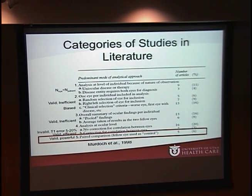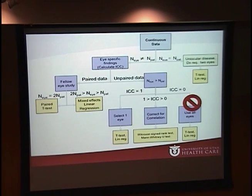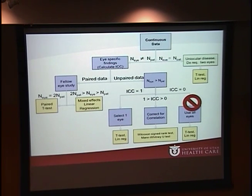The second subgroup did correct for correlation of data — only 3% of studies — and was valid and efficient. The final category is paired eye comparisons using the fellow eye as a control, which is a valid and powerful method. After evaluating each type of study, I constructed an algorithm that simplifies determining the appropriate method of analysis. We begin with continuous data and first determine whether the number of eyes equals the number of patients. If it does, we can use standard techniques such as a t-test or linear regression.